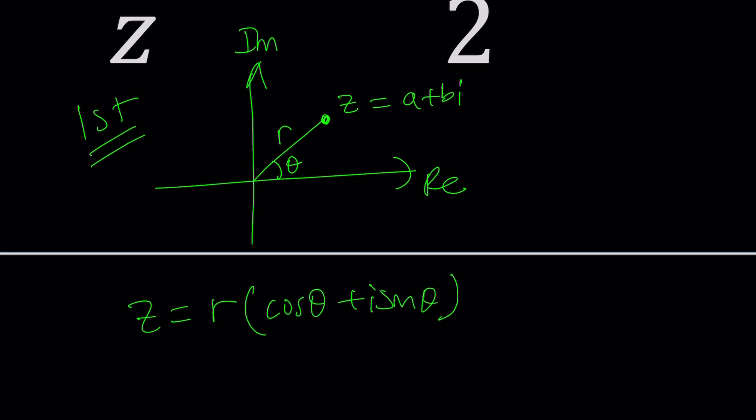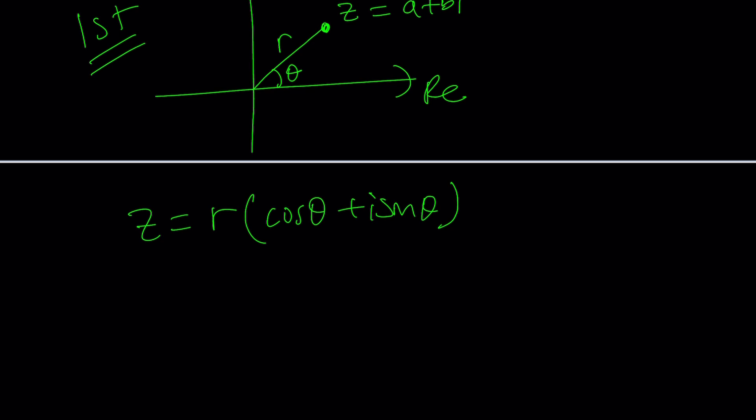But thanks to Euler, we can abbreviate this, shorten it, and write it as R times e to the iθ. This is just an amazing discovery. That's why Euler is just amazing, wonderful.